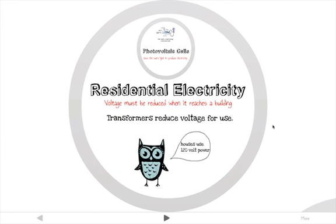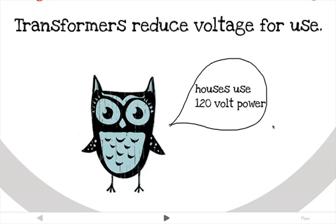When electricity reaches a building, the voltage must be reduced by a transformer. Each building or small group of buildings will have a transformer for this purpose. The voltage is reduced to about 230 to 240 volts for small buildings, and then reduced again to 120 volts for household use.